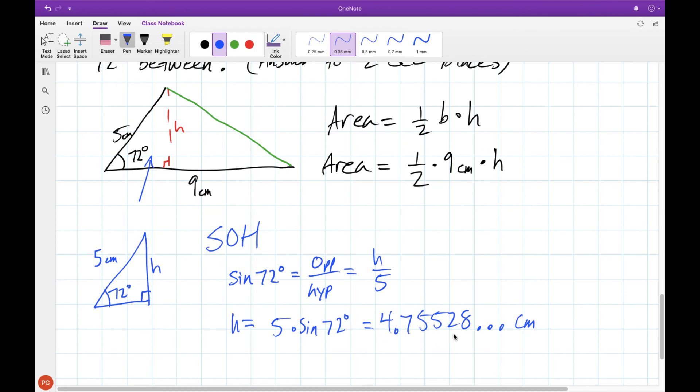Now I'm keeping some extra decimal places here just to make sure that we don't have any rounding errors. Now that we have our height here we can plug it back into our area formula and get our answer, which is this right here rounded to two decimal places.